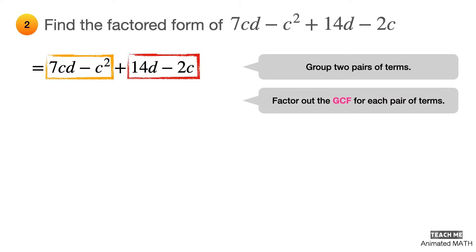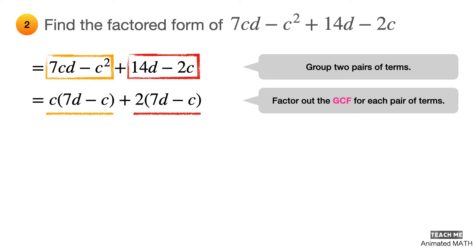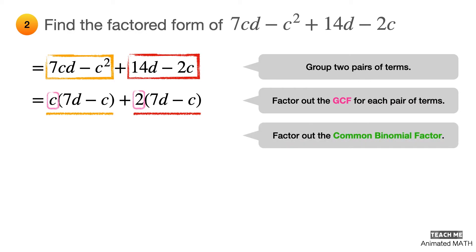Factor out the greatest common factor from each pair of terms. You can then combine the GCFs from each pair of terms so that they form another binomial factor, which is C plus 2. And the final answer is (C + 2)(7d − C).